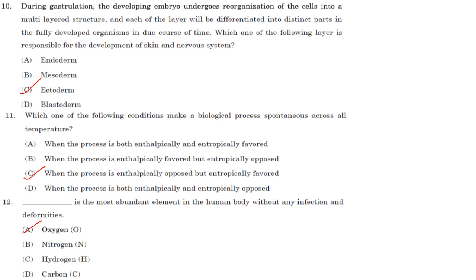The most abundant element in the human body without any infection or deformity is oxygen, which accounts for about 65% of a person's mass.